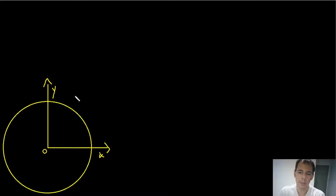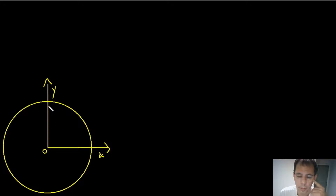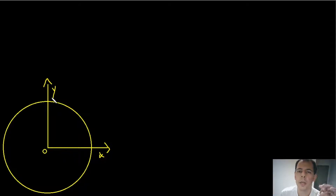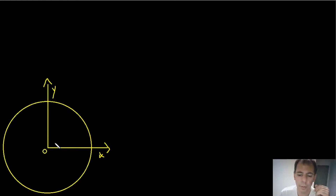Today I'm going to talk about the proof of the circumference of a circle. Everybody knows it's 2πr, but schools don't teach us why — at least mine didn't. To understand this, you have to understand the arc length formula for finding curve length on a plane using calculus. I'll put a video link in the description so you know where the formula I'm using comes from.